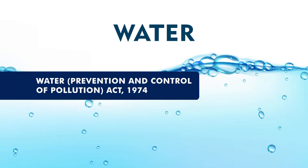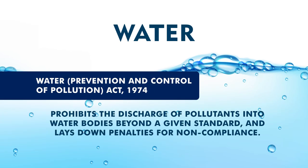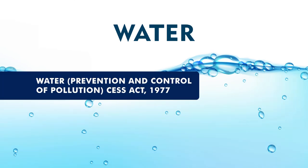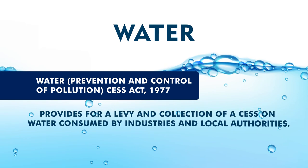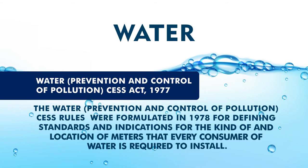There is also the Water Prevention and Control of Pollution Act 1974, which prohibits the discharge of pollutants in water bodies beyond a given standard and lays down the penalties for non-compliance. Then there is the Water Prevention and Control of Pollution Cess Act 1977, which provides for a levy and collection of a cess on water consumed by industries and local authorities. The water cess rules were formulated in 1978, defining standards and indicators for what kind of water can be supplied, how much can be charged, and what should be the location of the meter at every consumer's home.